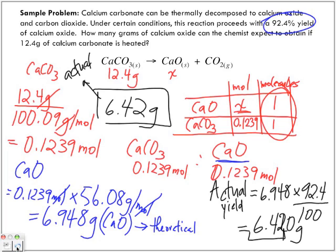So that is actually how much we're going to be able to extract from our experiment. 6.42. But theoretically, we should be able to extract 6.948 grams. But it's still a very good percentage. That's the percentage yield that we get.